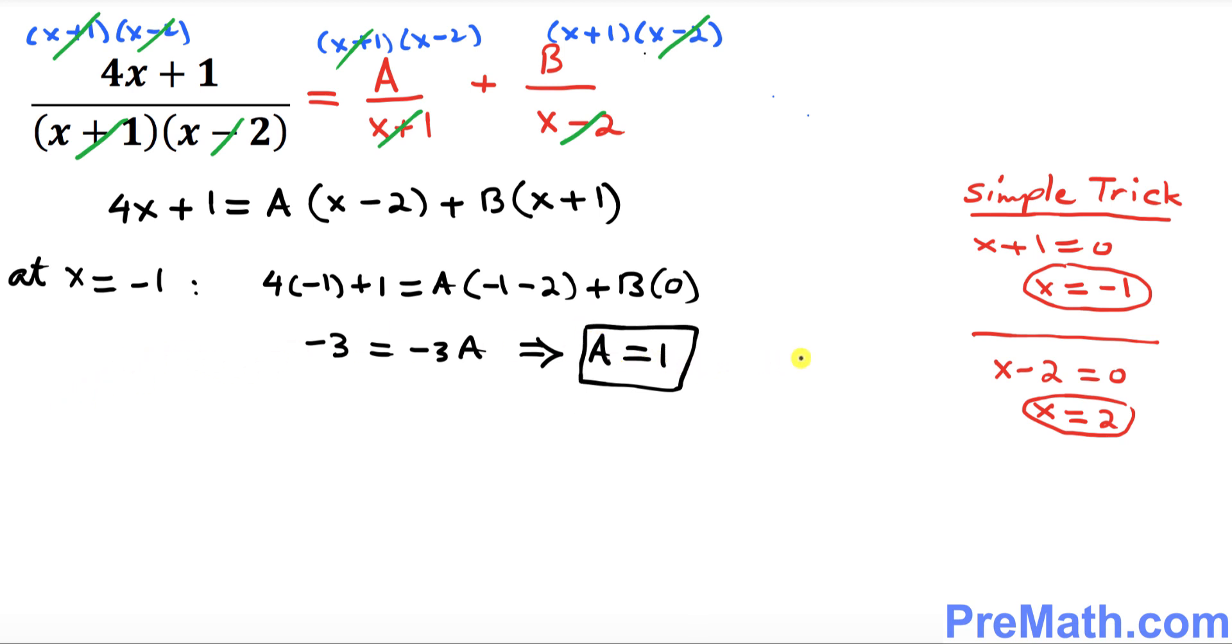Now likewise, we have another x equals 2. So at x equals 2, what happens when you plug it in? In our original equation, we're gonna get 4 times 2 plus 1 equals... look at this: A times, when you plug in 2, 2 minus 2 becomes 0, plus B times (2 plus 1).